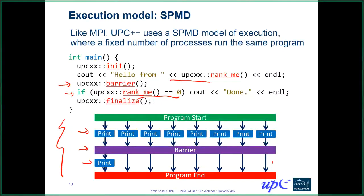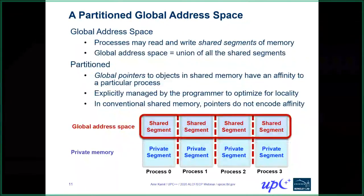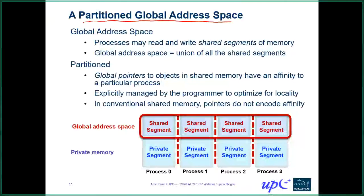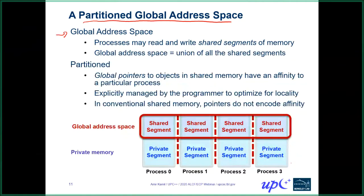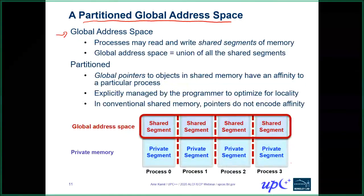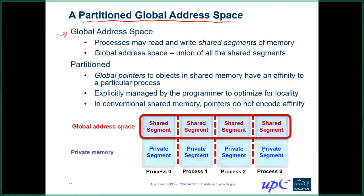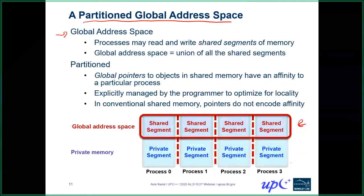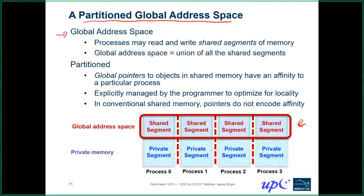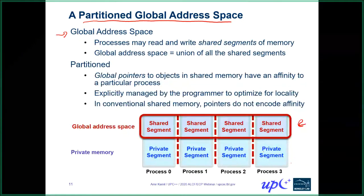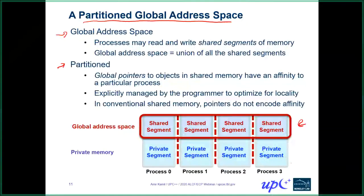Going back to the PGAS memory model in a bit more detail: there are two pieces — the global address space part and the partition part. For the global address space, we have a conceptual global address space which is a collection of shared memory segments across the processors. The memory for each process is divided into a private segment and a shared segment, and the collection of those shared segments is the overall global address space. Each process can access its own private segment, its own shared segment, but also the shared segments of the other processors.